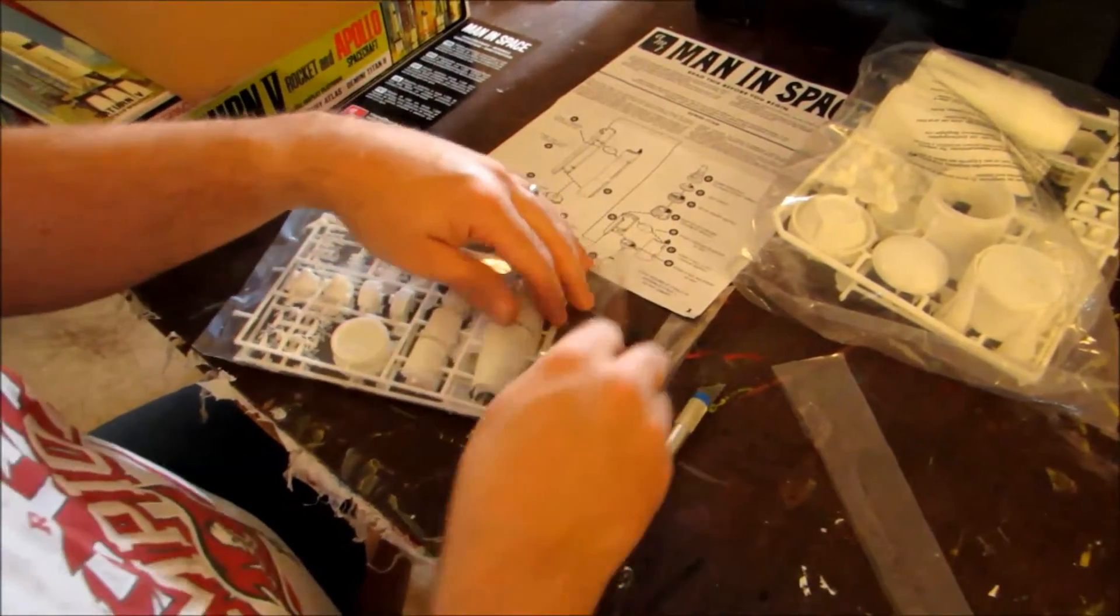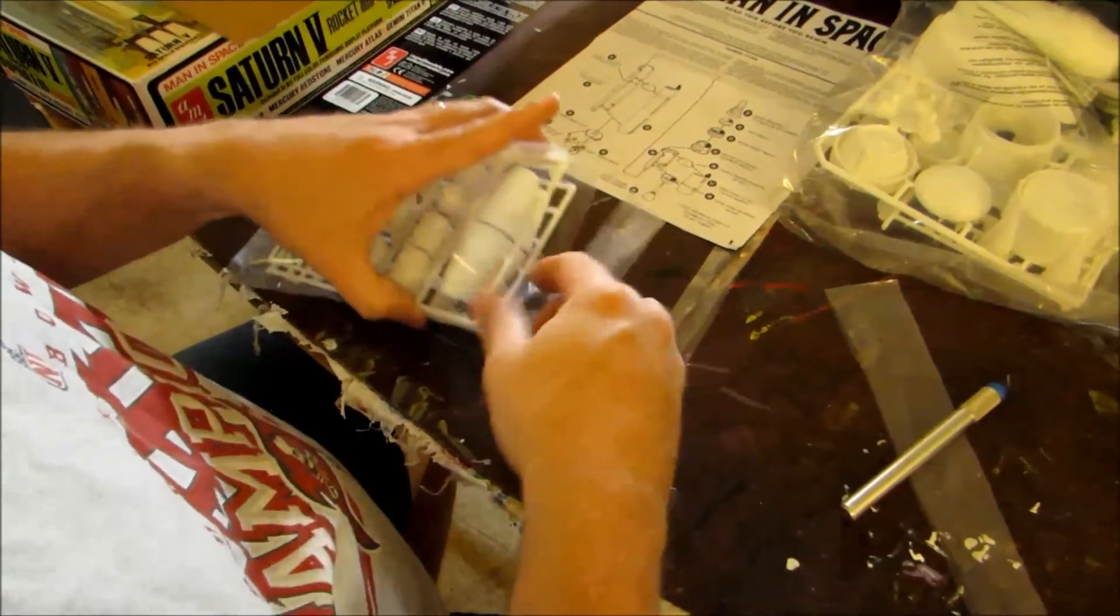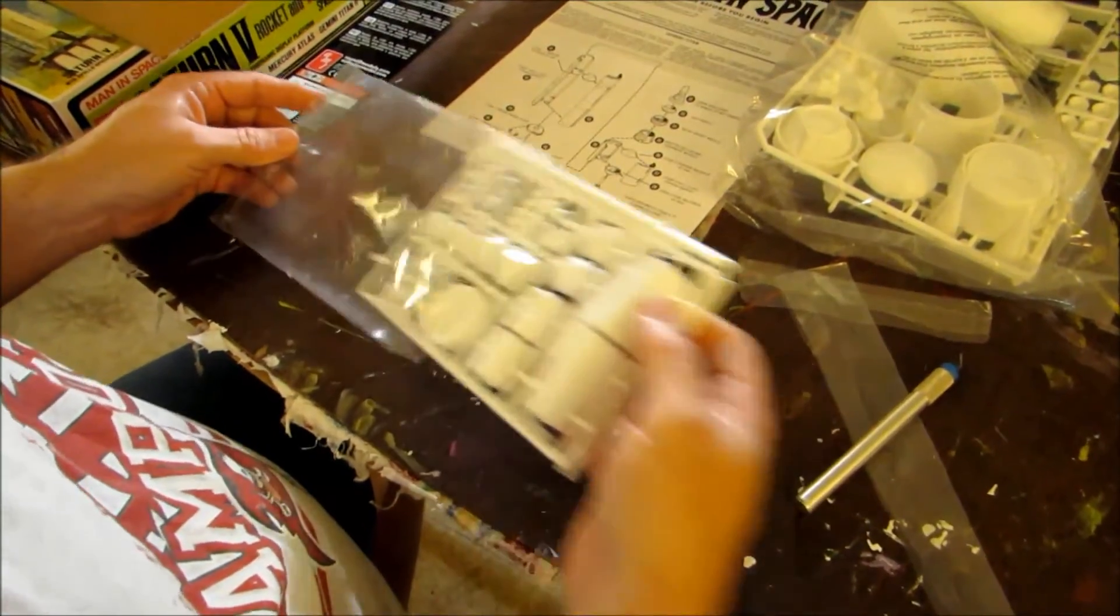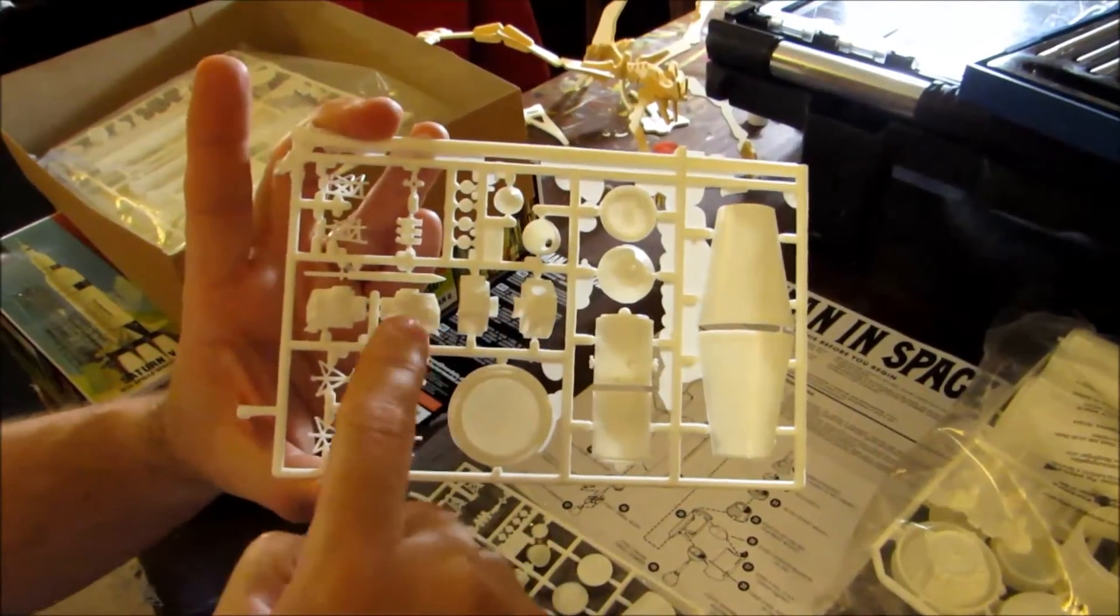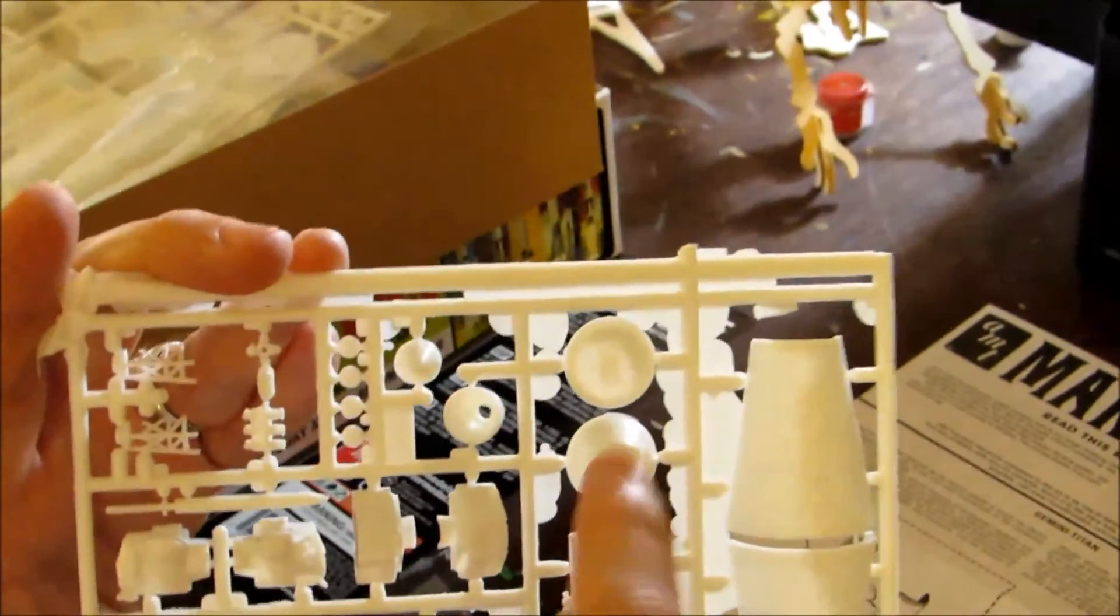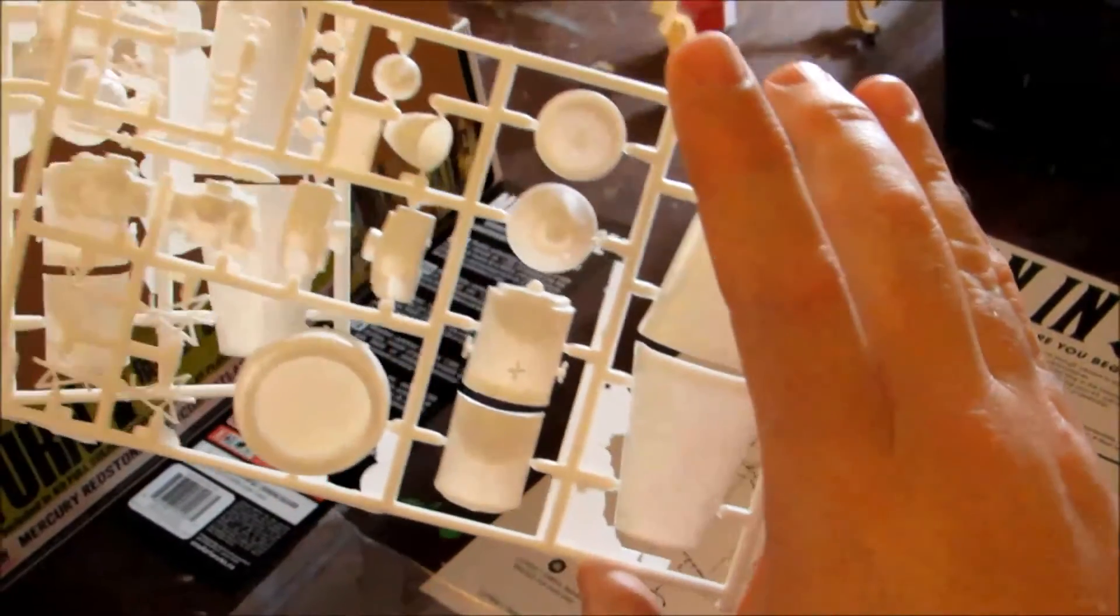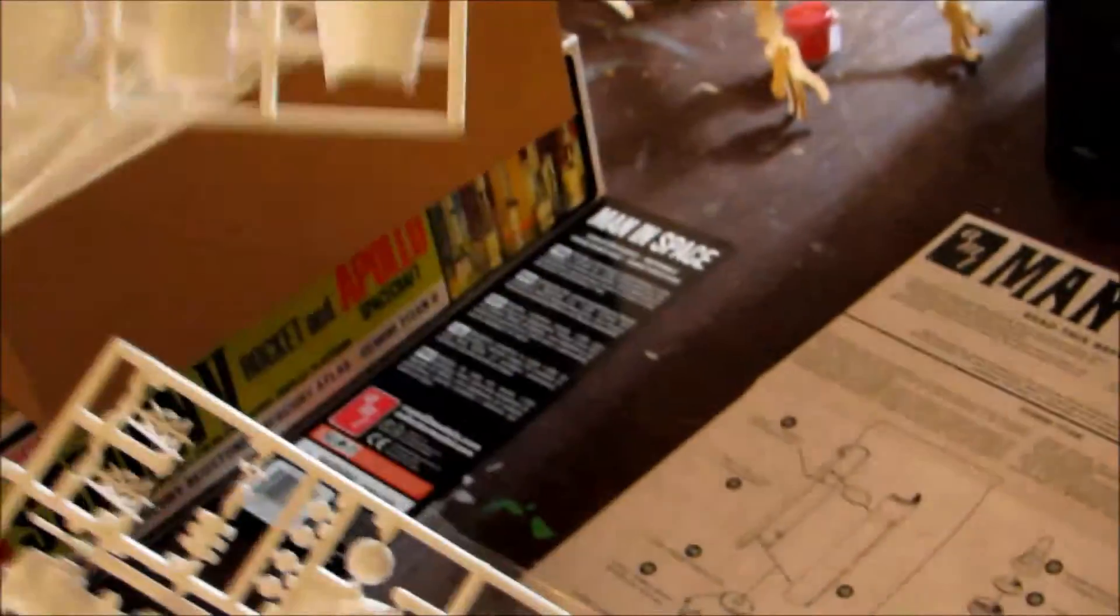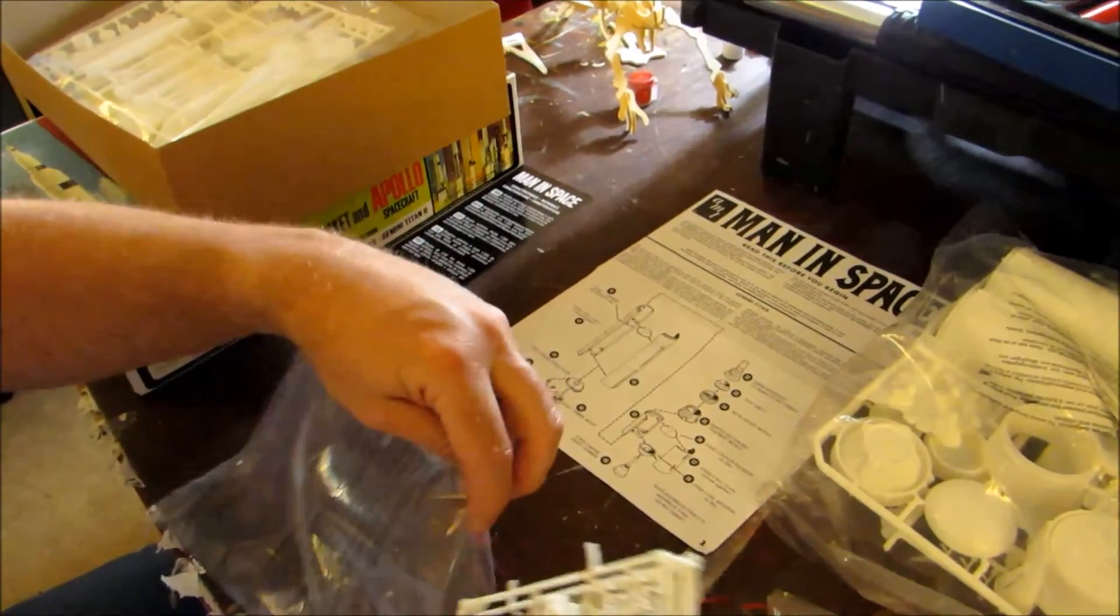This is the upper assemblies for what would be the Saturn 1B and the Saturn 5, both of which carried the lunar module. As you can see, you have your LEM, lunar excursion module. You have the legs of the LEM or the spider as they used to call it. The command module. The cone that held the LEM. The service modifier didn't say that. The capsule. The escape gantry. And you see you have pretty much two trees the same. One is for the Saturn 5 and one will be for the Saturn 1B. Again, both of those rockets did carry the LEM.